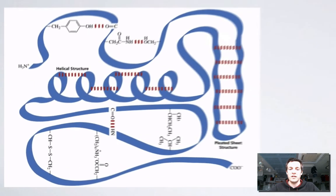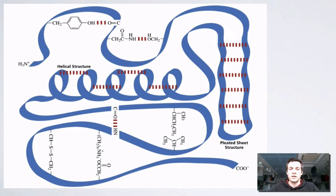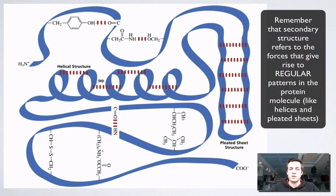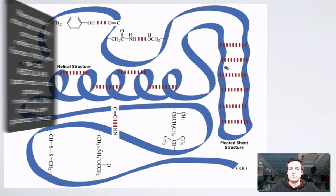Now this diagram here makes a distinction between the secondary structure, which we can see here with these little red marks. These are supposed to be hydrogen bonds, these red dashed lines. But if they're between amide groups, it's secondary structure.